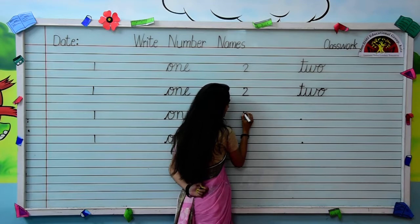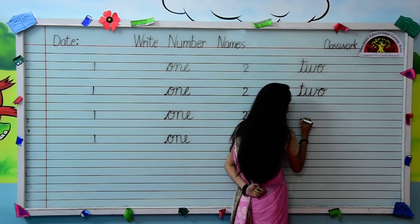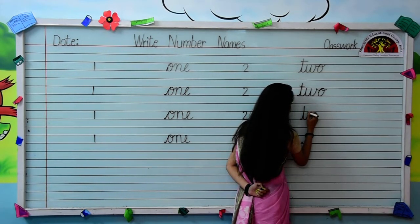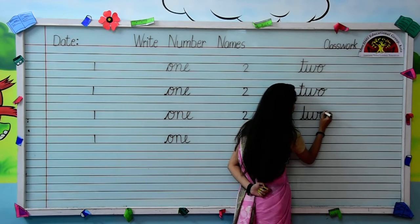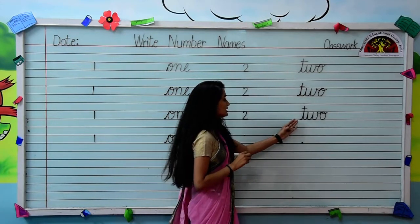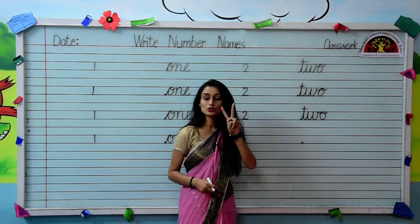Let's write it once again. Write numeral 2. Now we will write the spelling. Write small cursive letter T. Joining letter T, write W. And from the end point of letter W, write O like this. Kids, write very neatly: T-W-O.